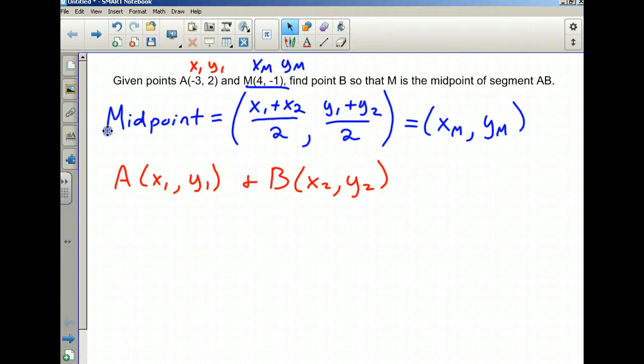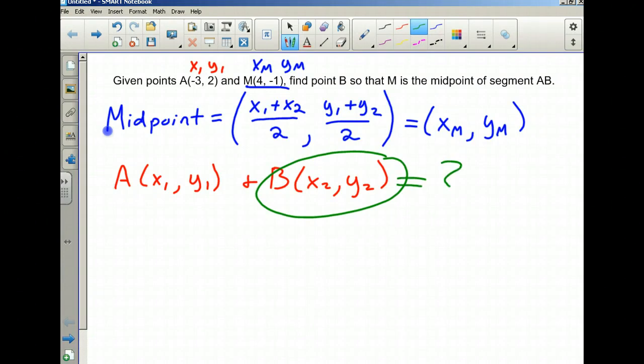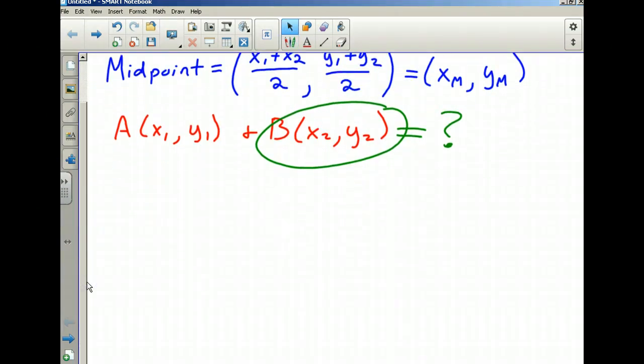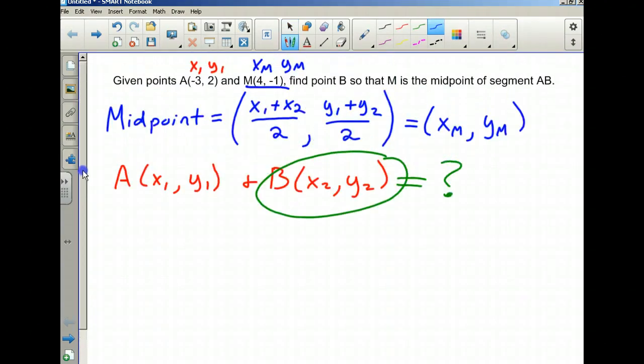Using the midpoint formula, we have that x₁ is -3, and x₂ is the x-coordinate of B, which we don't know, so I'm going to put x₂ there over 2.